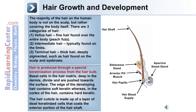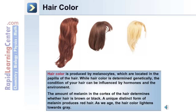Hair is produced through a special keratinization process from the hair bulb. Basal cells in the hair matrix, deep in the dermis, divide and are pushed towards the surface. The edge of the developing hair contains soft keratin, while the cortex of the hair contains hard keratin. The hair cuticle is made up of a layer of dead keratinized cells that coats the exterior portion of the hair shaft. Hair color is produced by melanocytes, located in the papilla of the hair in the dermis. Hair color is determined genetically, but the condition of your hair can be influenced by hormones and the environment.